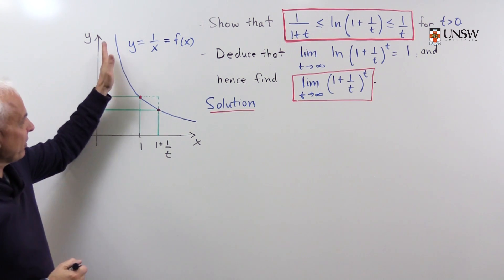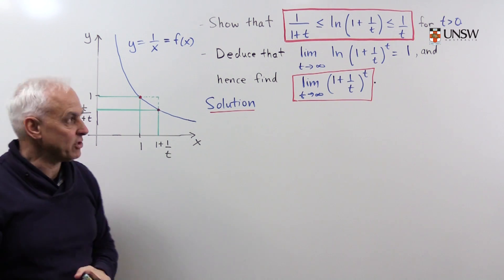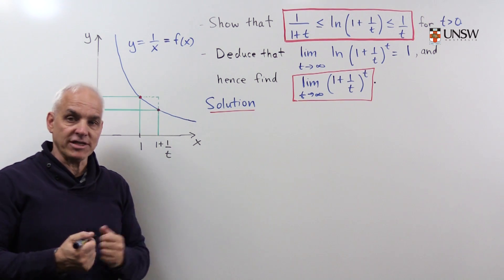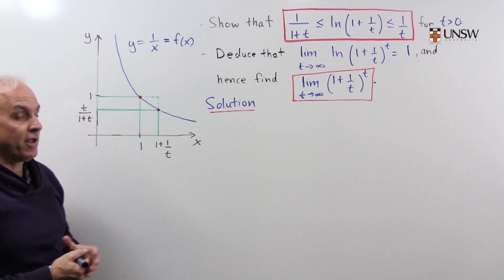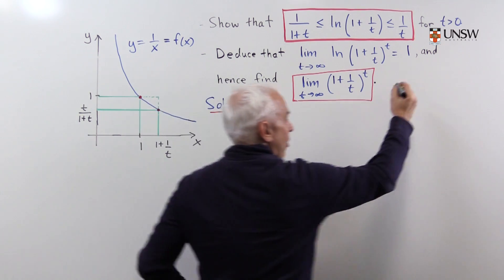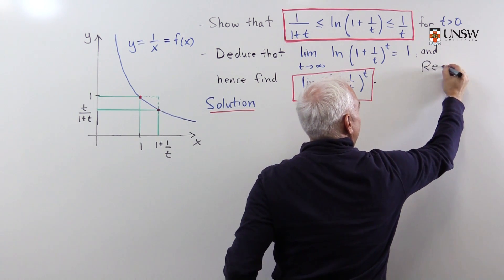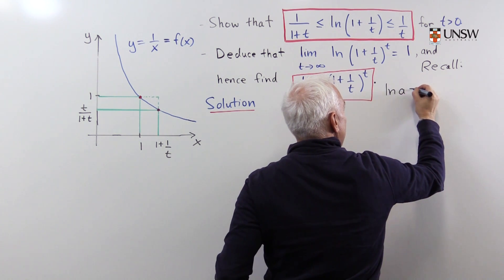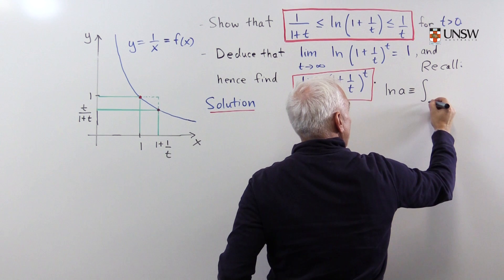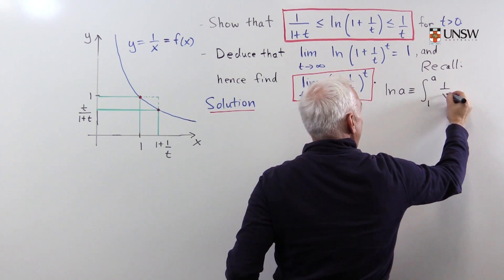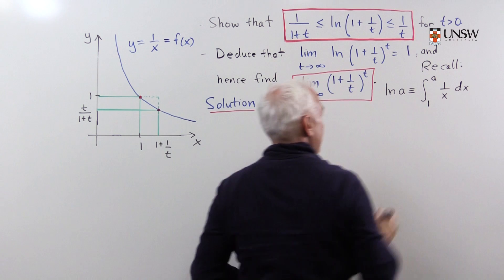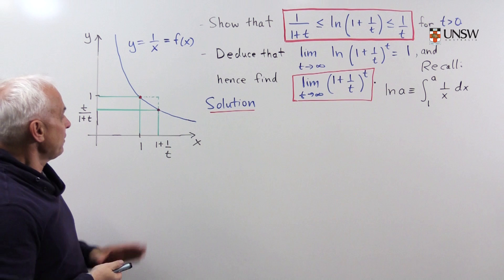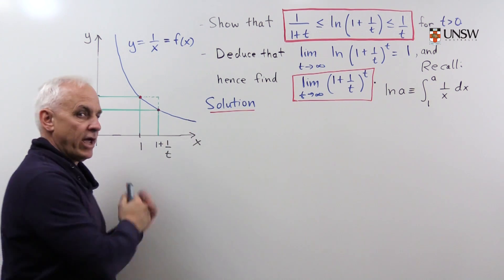Let's start by looking at the function 1 over x, which plays an important role here, because the log function itself is defined in terms of 1 over x. Let's recall our definition of log: log of a is equal to the integral from 1 to a of 1 over x dx. So it's the area under this function from 1 to whatever value a we're considering.